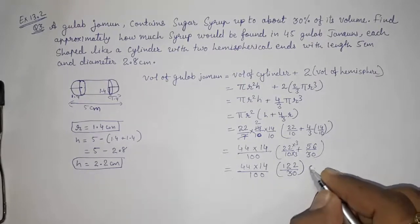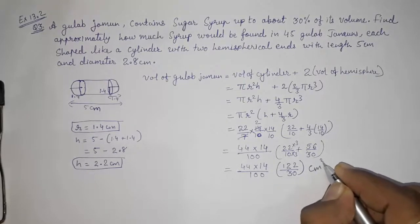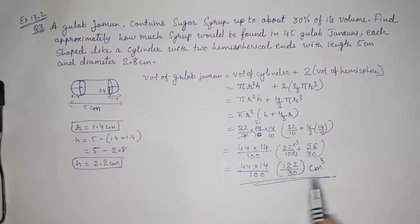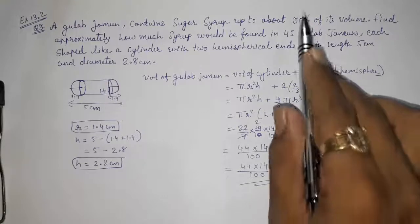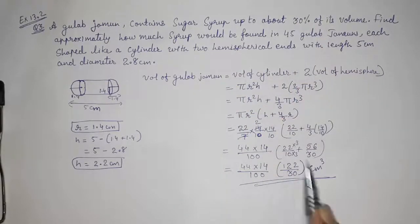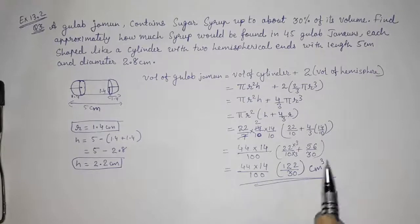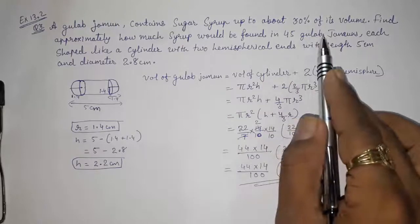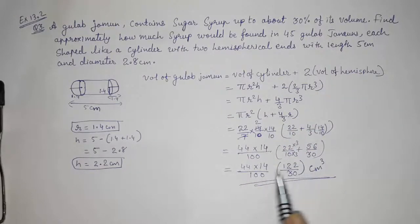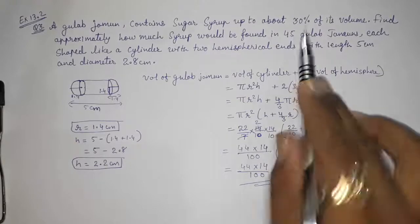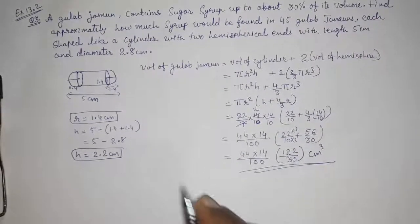But I am not going to cancel directly. This will be our volume of 1 gulab jamun. We don't want this, that's why I am not multiplying. Actually we want, they told that 30% is syrup. So in this volume, only 30% is syrup. And we want how much syrup would be found in 45 gulab jamuns. So first we have to find out the 30% of this and then we have to multiply it with 45.